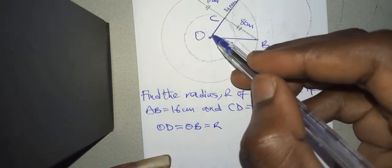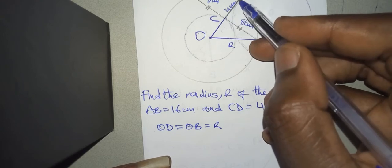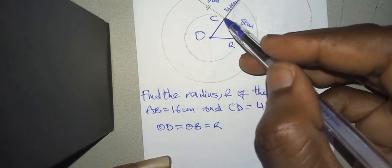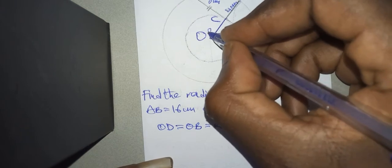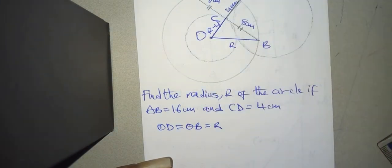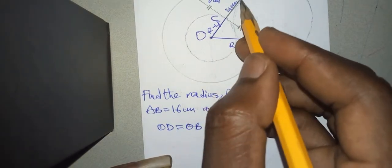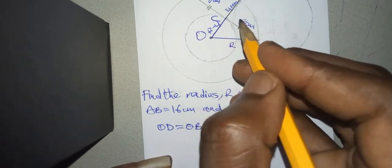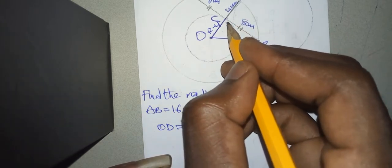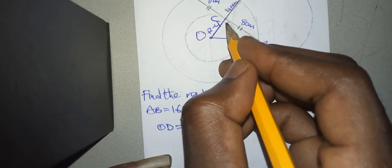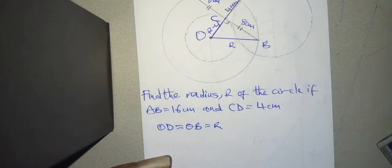Now, if we agree the whole of this is R and this is 4, then OC is going to be R minus 4. Also, once this is perpendicular, then we have a right angle here. We have formed a right angle triangle CBO or BCO.